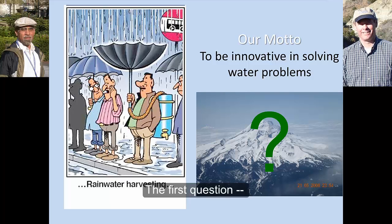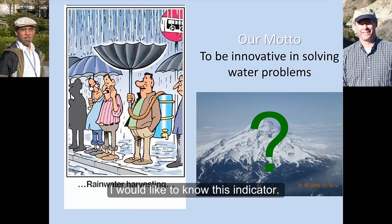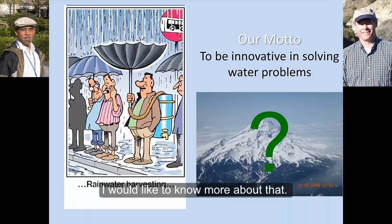The first question — I'm going to go through them as they came in. The first one was: is this a redo of NRCS's water quality indicator of two decades ago? I would like to know which indicator this is, because I was not with NRCS two decades ago and I'm not aware of this tool. If the person asking this question can send me a link, I would certainly like to review that and see how we are different or how we have contributed more. I would like to know more about it.